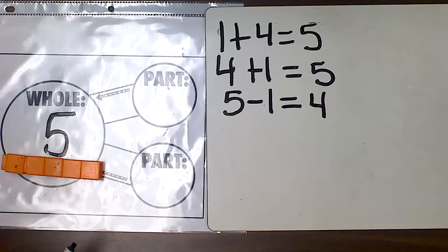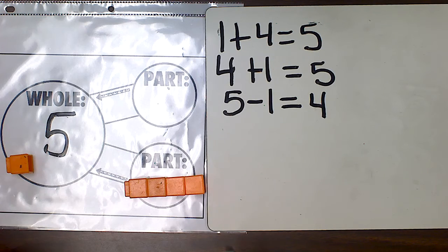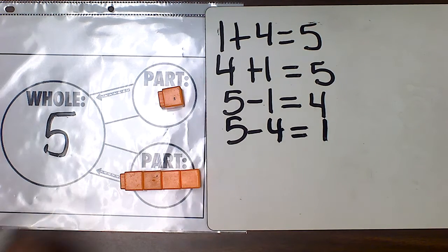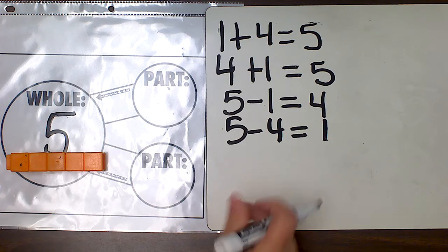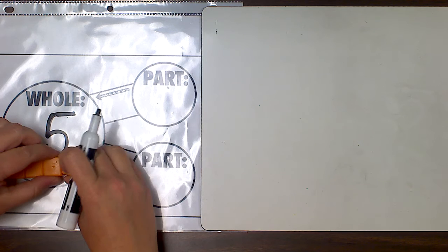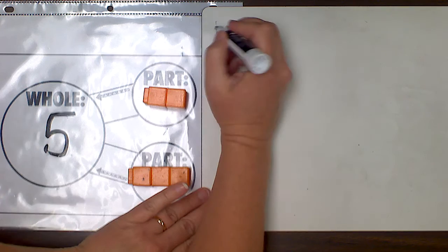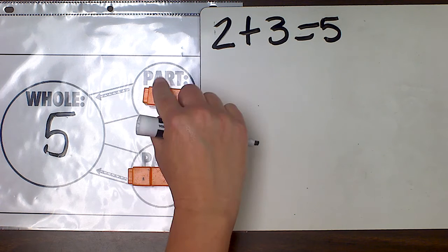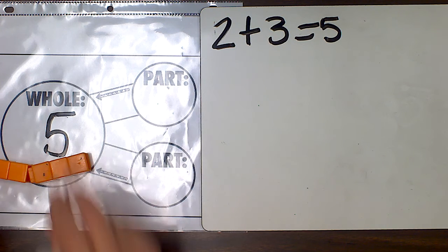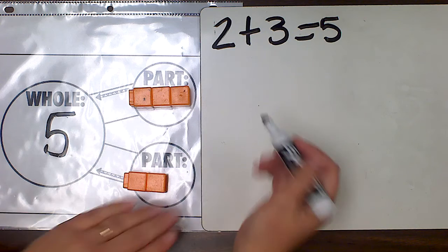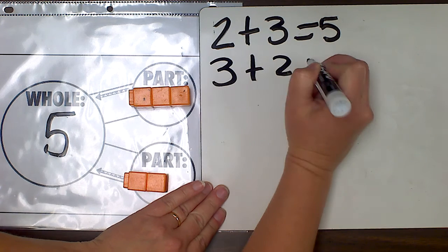Or start with five again — this time I'm going to take away four. So if I have five and I take away four, that is equal to one. I can also show five a different way: two plus three equals five. If my parts are two and three, I'm going to put those parts together to make the whole number of five. Or I could swap my parts and say three plus two equals five.